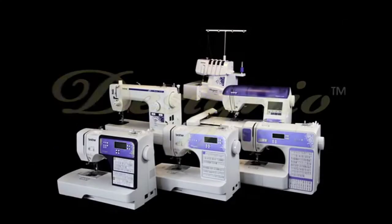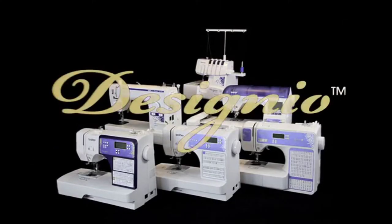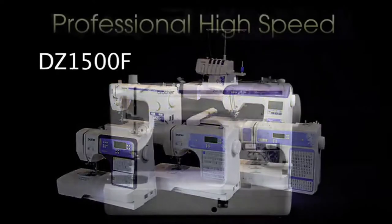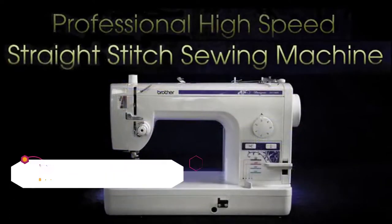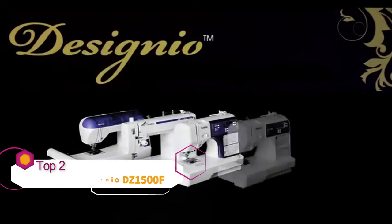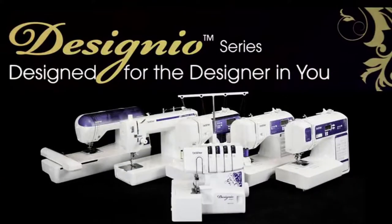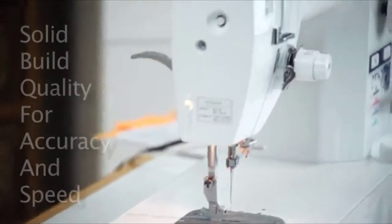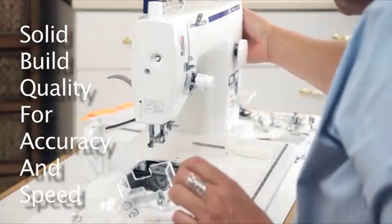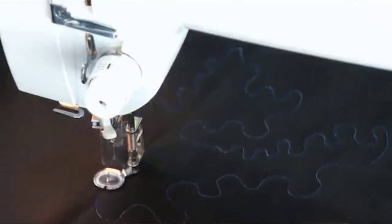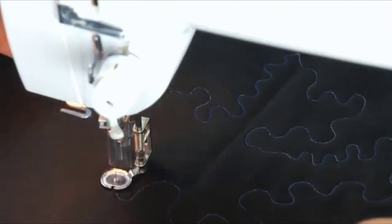Welcome to the world of high-speed straight stitch sewing, introducing the Designio DZ1500F, a high-speed straight stitch sewing machine, one of six machines in the new Designio series from Brother, designed for the designer in you. You'll love having a heavy-duty semi-industrial sewing machine that can sew up to a lightning-fast 1500 stitches per minute.